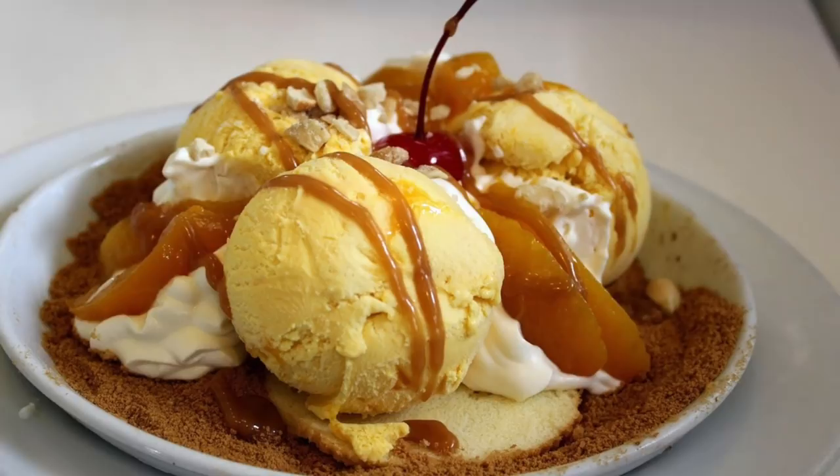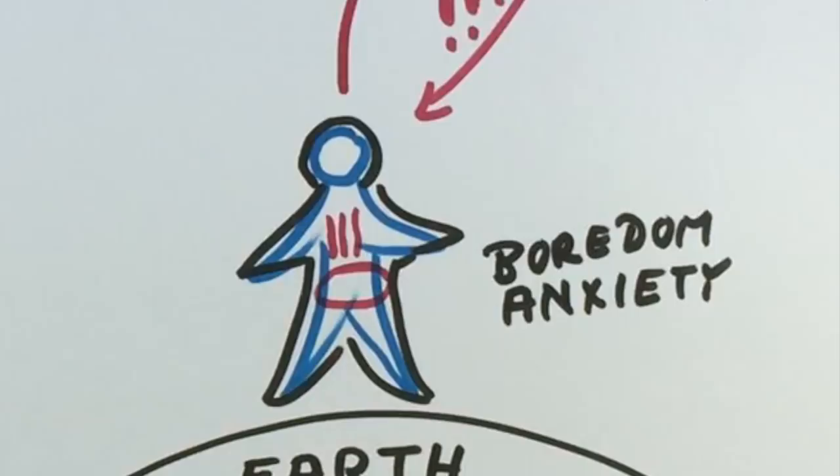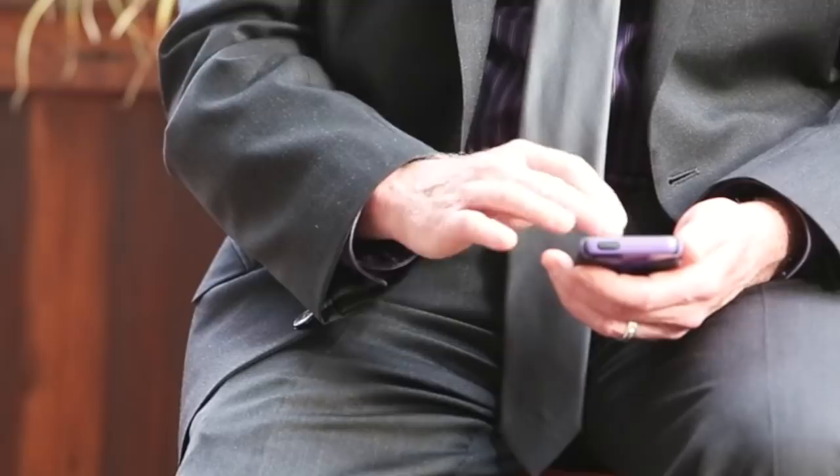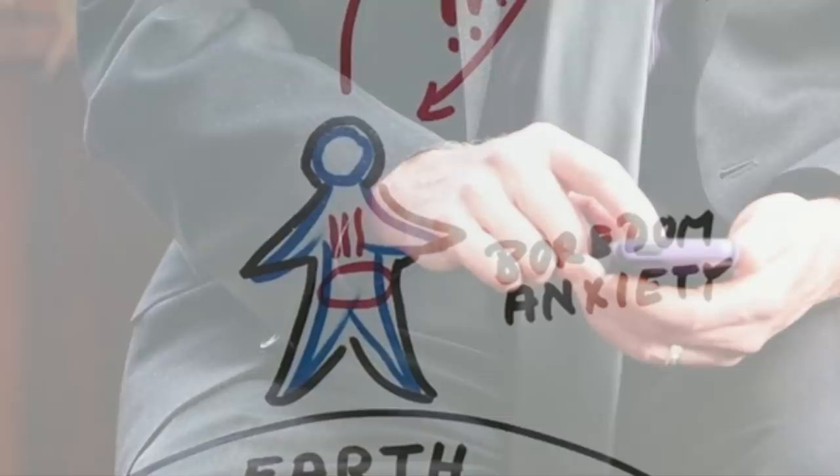For instance, we might be running to the refrigerator or do some other forms of escape and distraction. That can even be drugs, alcohol or sex. But one of the most popular and fastest way is losing ourselves in the Internet. Our cell phone, television, binge watching or video games.